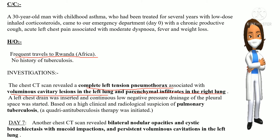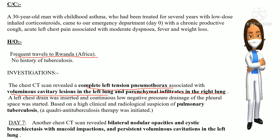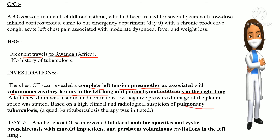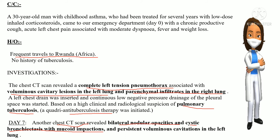A left chest drain was inserted and continuous low negative pressure drainage of the pleural space was started. Based on high clinical and radiological suspicion of pulmonary tuberculosis, the patient was placed on anti-tuberculosis therapy. On day seven, another chest CT scan revealed bilateral nodular opacities and cystic bronchiectasis with mucoid impactions and persistent voluminous cavitations in the left lung.